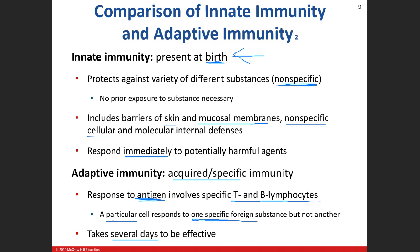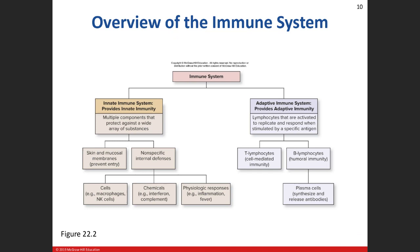Adaptive immunity takes several days — a little bit of time. So think: innate = immediate, non-specific. Adaptive takes a little bit of time but is specific to one type of antigen.